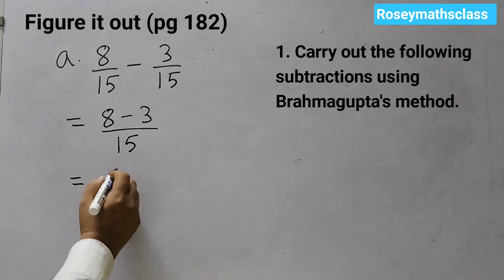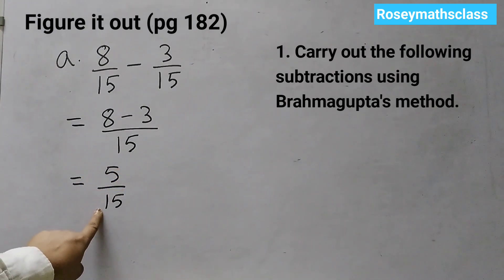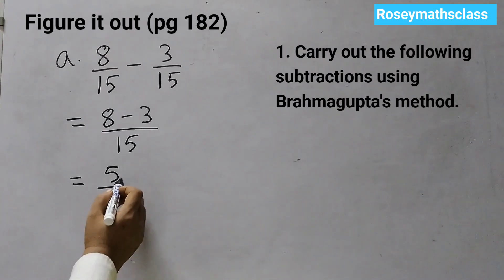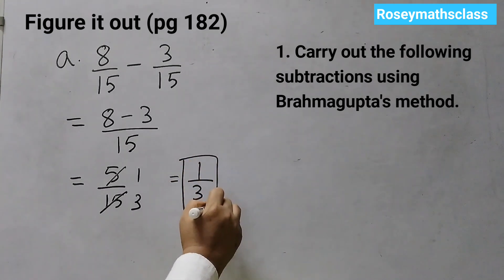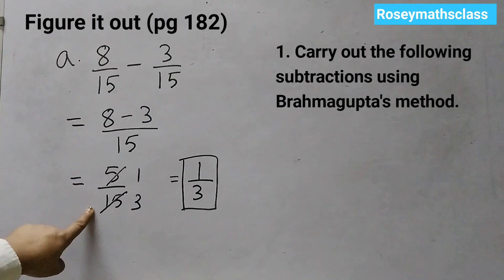8 minus 3 is 5. 5 upon 15. Now don't leave the answer here like this because we have common factors here. So you need to simplify it, write it in lowest term. So now 5, 1's are 5. 5, 3's are 15. So your final answer is 1 upon 3. Your answer is not 5 upon 15, your answer is 1 upon 3. Be careful about it.